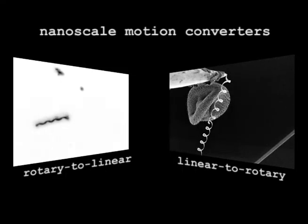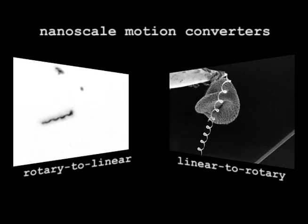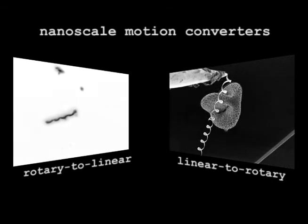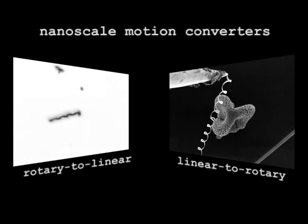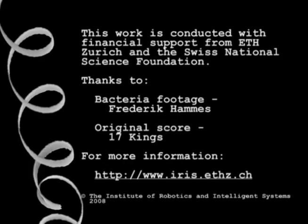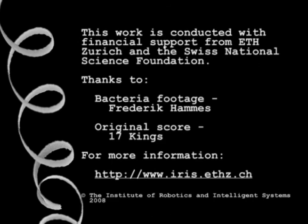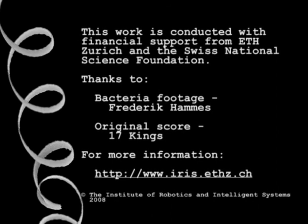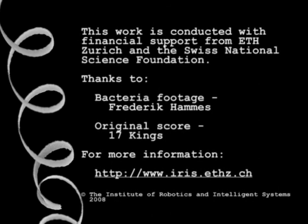Helical structures have demonstrated their ability to perform linear to rotary and rotary to linear motion conversion at the nanoscale. These new capabilities enable fascinating opportunities in untethered mobile micro-robotics, three-dimensional imaging, and many others still to come.